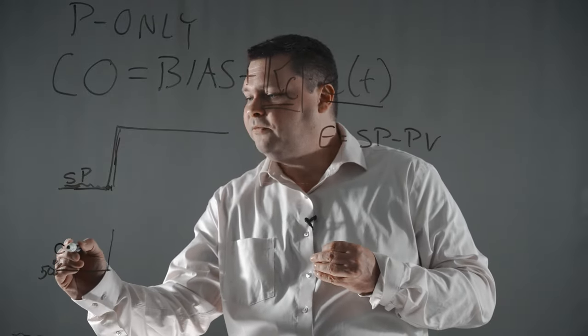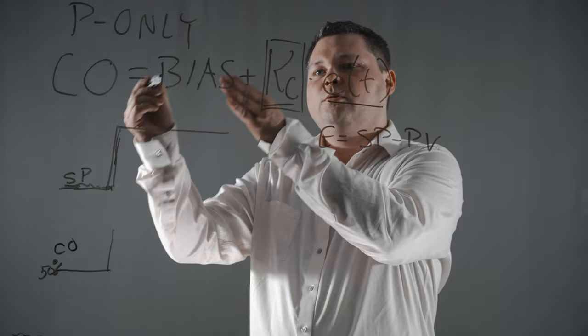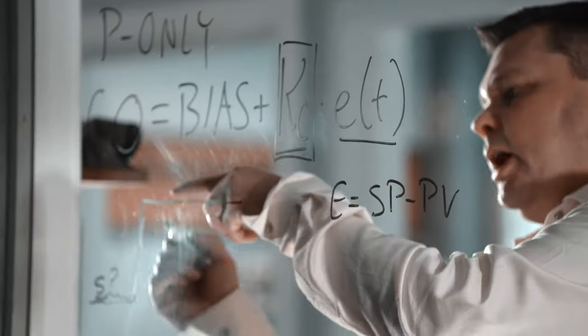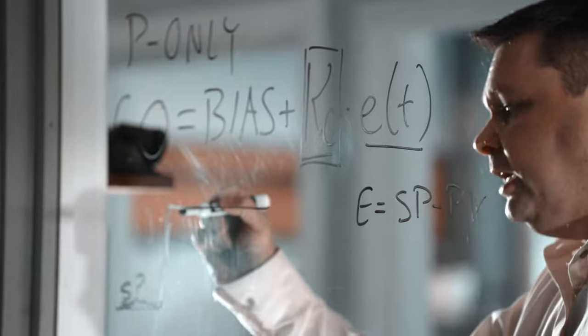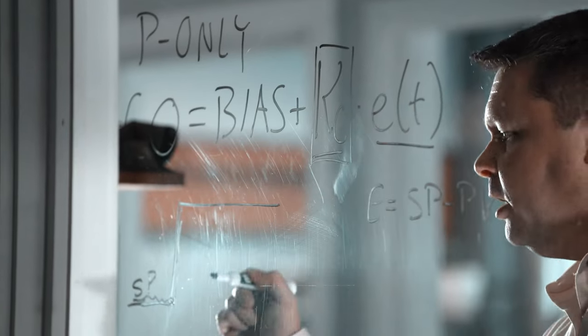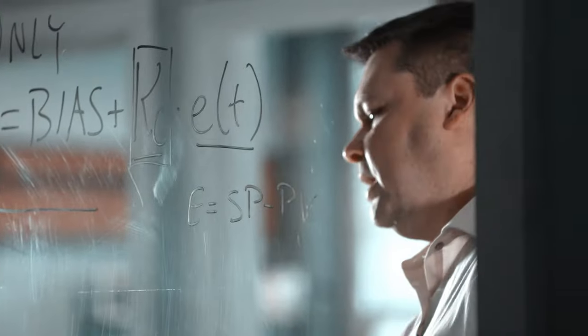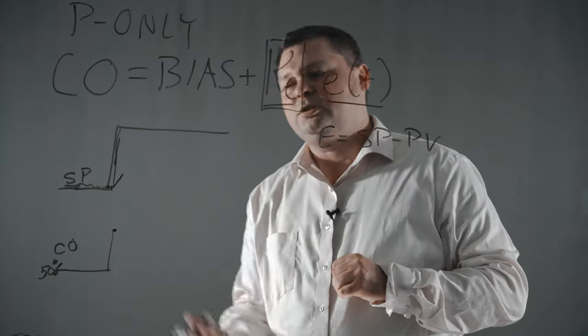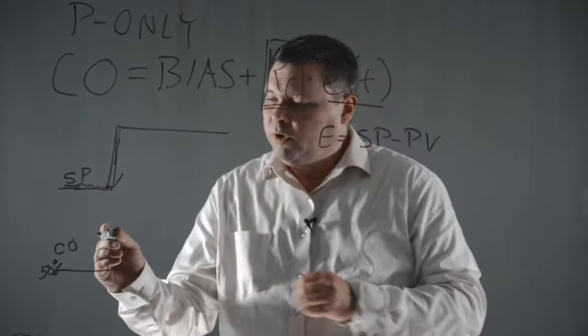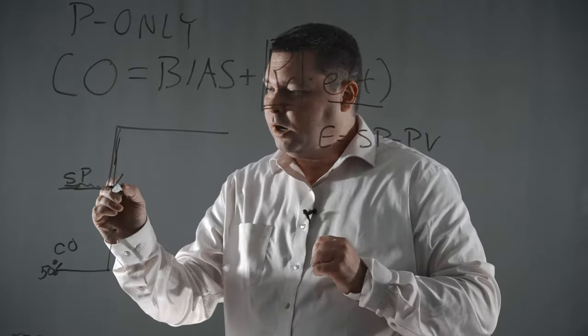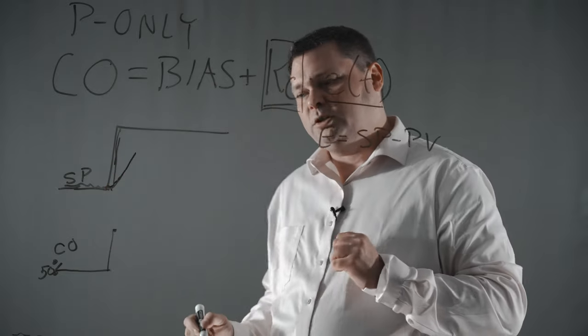If this is your controller output value, and the output is equal to the bias plus the gain times the error, when I introduced error because the setpoint changed—setpoint is up here, process variable is down there, there's some sort of error—the error times the gain is our correction. And our process variable is going to start to go up. We've opened the valve to try to bring that flow up to the target. So our process variable starts to move up.